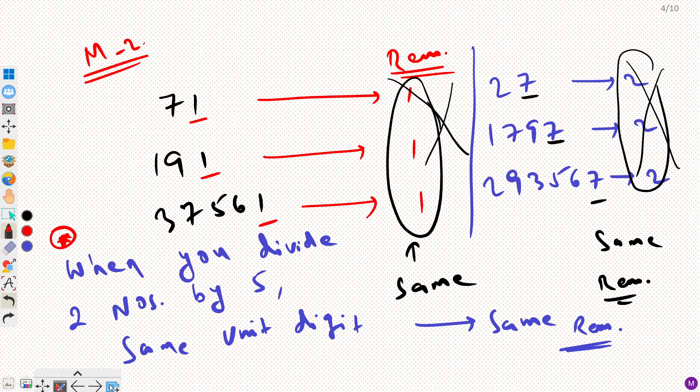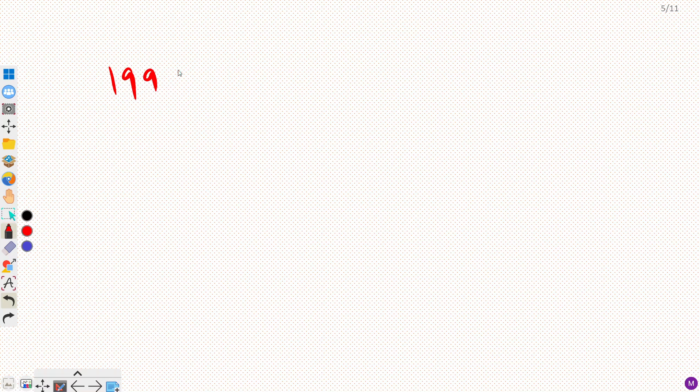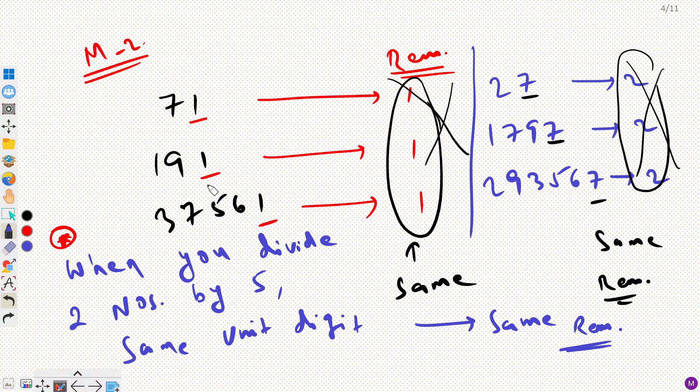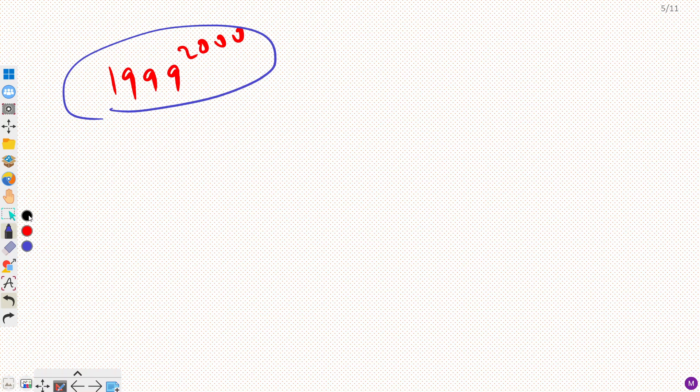Now the question is 1999 raise power 2000 right. Now we don't want to solve this. So the property here we note that if I have same unit digit then I am going to get same remainder. So let's say if I know the unit digit of this one, so can I take a smaller number with the same unit digit.